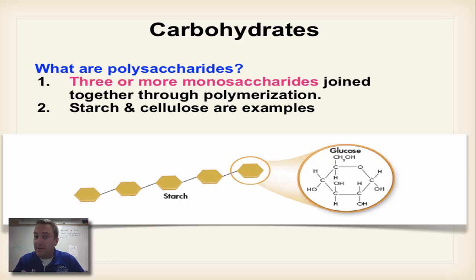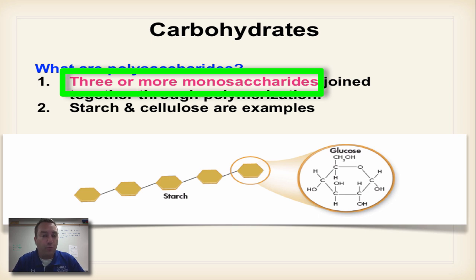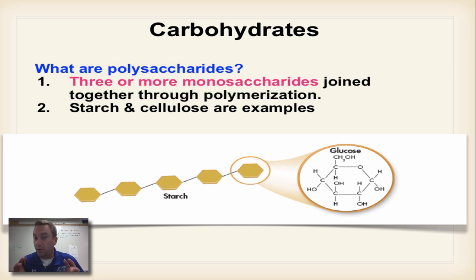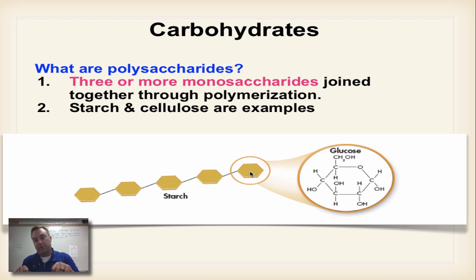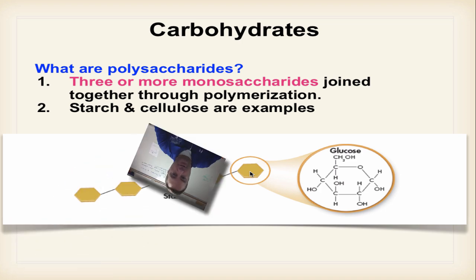Polysaccharides — poly means many — consist of three or more monosaccharides joined together, all through polymerization, also known as dehydration synthesis. Starch is a polysaccharide, as you can see with five glucose molecules hooked together here. In fact, starch is a really long molecule — you could have hundreds of glucose molecules hooked together, and that's what starch is.